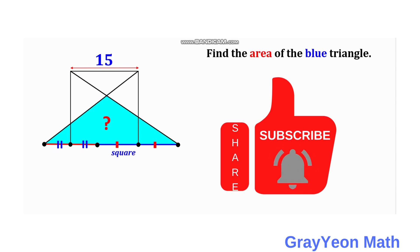Welcome to GrayonMath. We are asked to solve this problem. We have a square of 15 units on its side and it has a pair of diagonals that is extended up to the outside of the square.